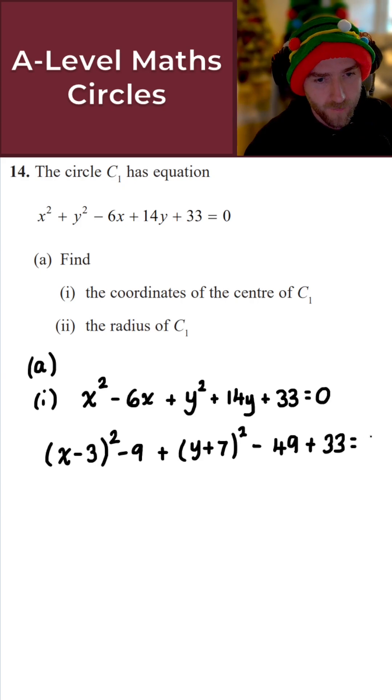Don't forget the plus 33. And all of this here is equal to 0. Now minus 9 minus 49 plus 33, that gives me minus 25. We're going to take that over to the other side.